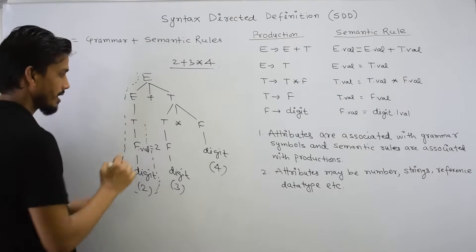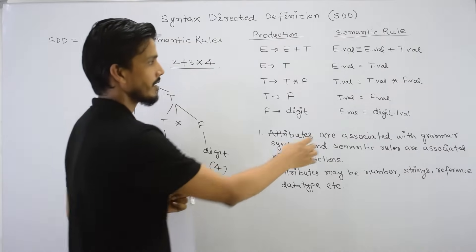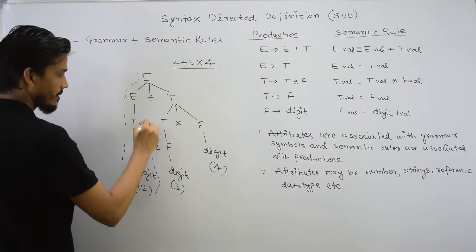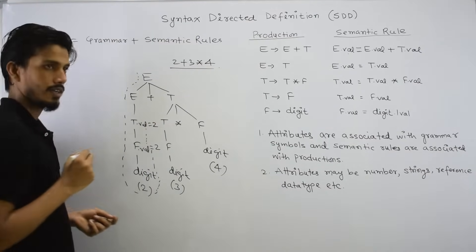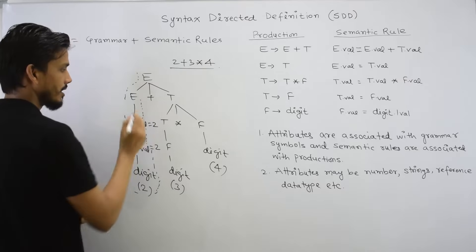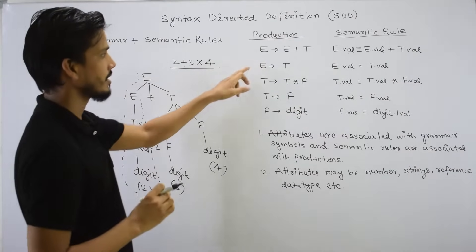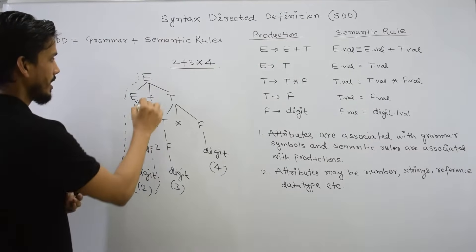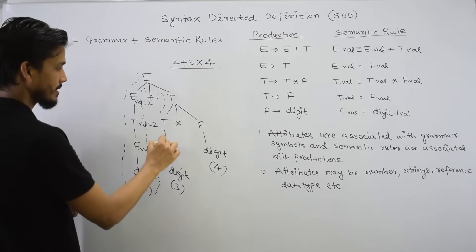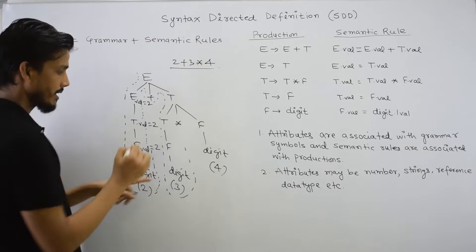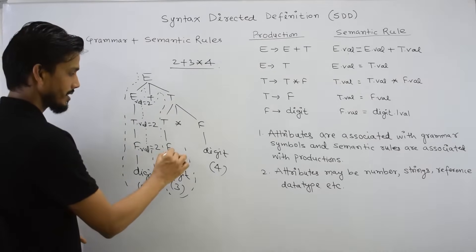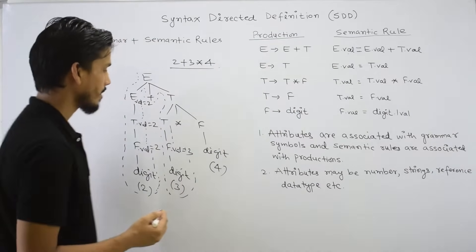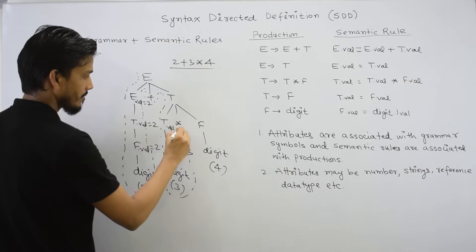Capital F is reduced to T. The corresponding action is that T.val equals F.val. So T.val is F.val, which is 2. Then here is another reduction: E.val equals T.val, which is 2. This digit reduces to capital F, the same thing is repeated, and this value is 3. Next, T.val equals F.val, which is 3.